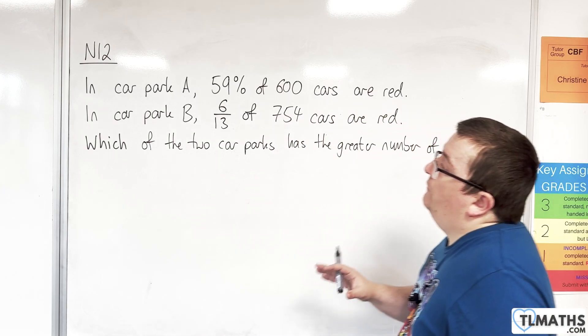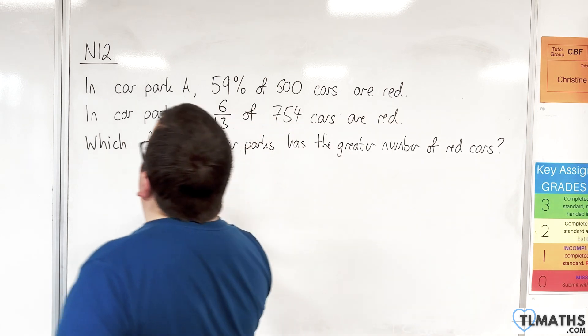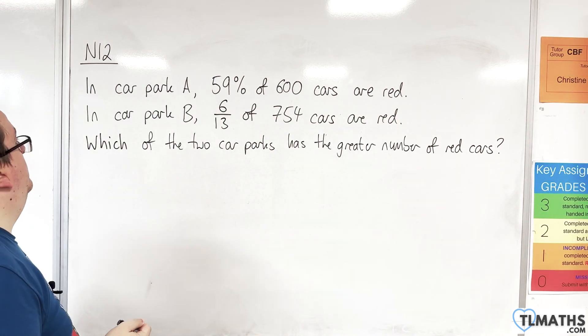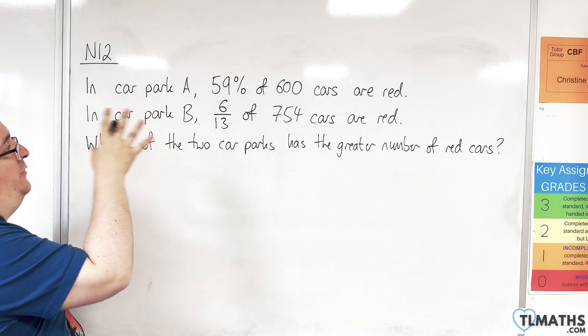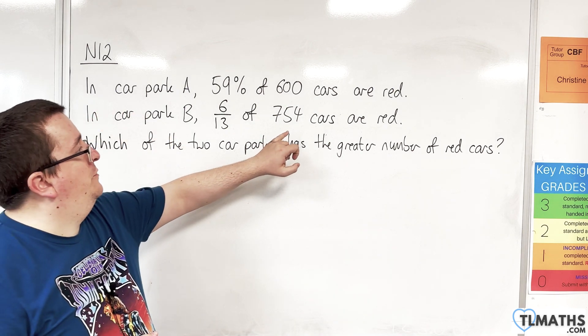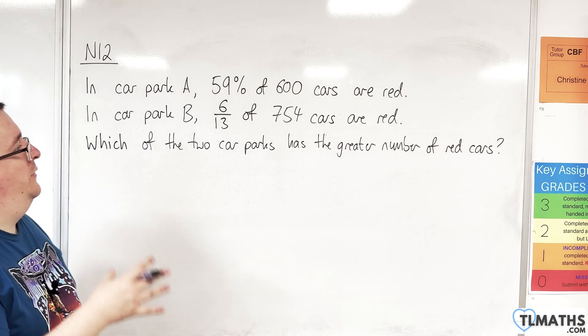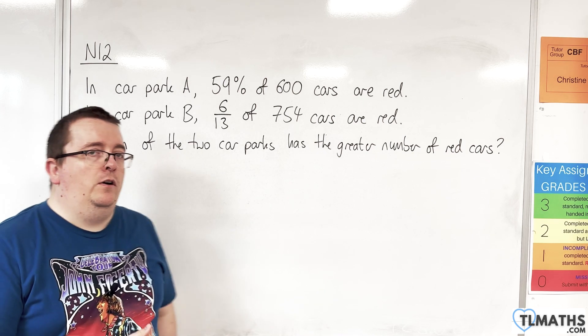In this problem, we have two car parks. Car park A, 59% of 600 cars are red. And car park B, 6/13 of 754 cars are red. Which of the two car parks has the greater number of red cars?